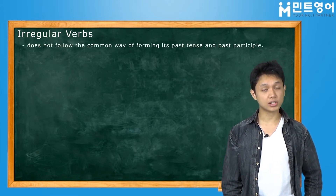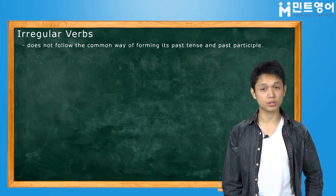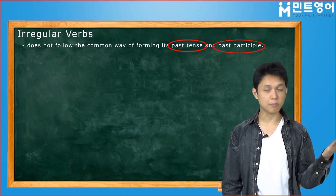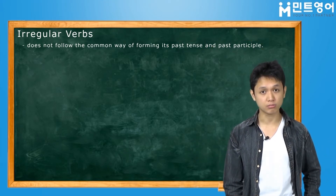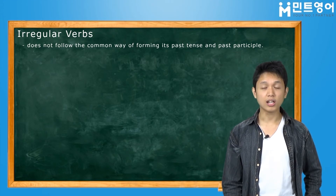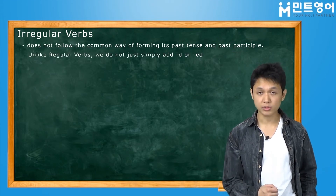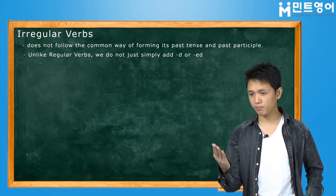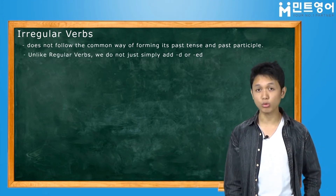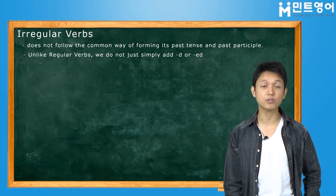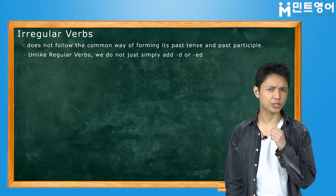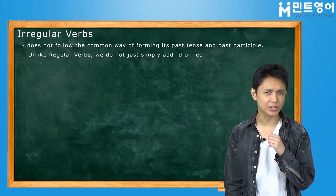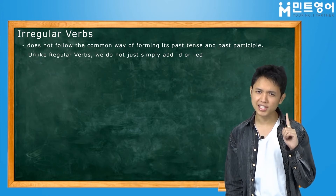Irregular verbs are called as such because they don't form their past tense and past participle as normal verbs do. Unlike regular verbs, they don't just add "-ed" — that won't do. You have to change their spelling. So let me give you an example.